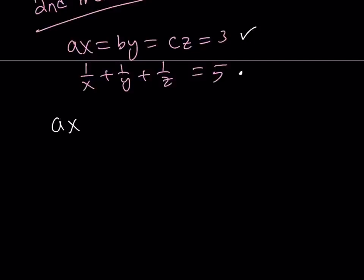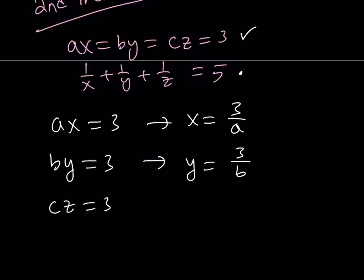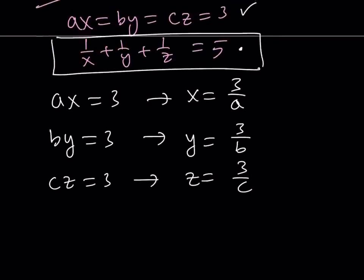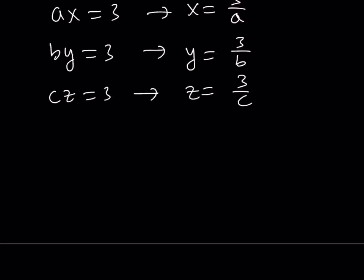So since AX equals three, this means X is equal to three over A. Since BY is equal to three, then from here, Y is equal to three over B. Since CZ is equal to three, Z equals three over C. Now remember, we have an equation like this one. One over X plus one over Y plus one over Z. So the sum of the reciprocals. So what is that equal to? Since we have XYZ, we can kind of plug it in.